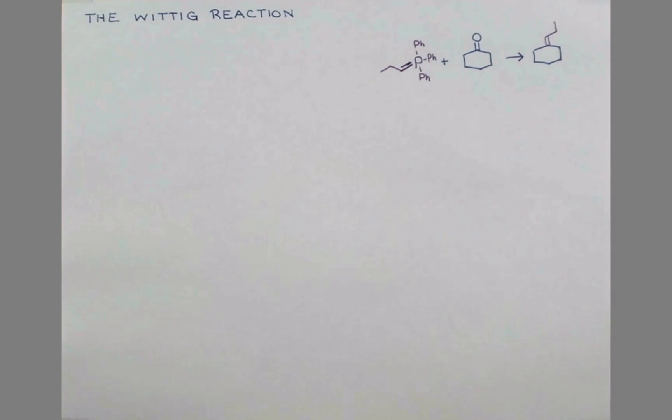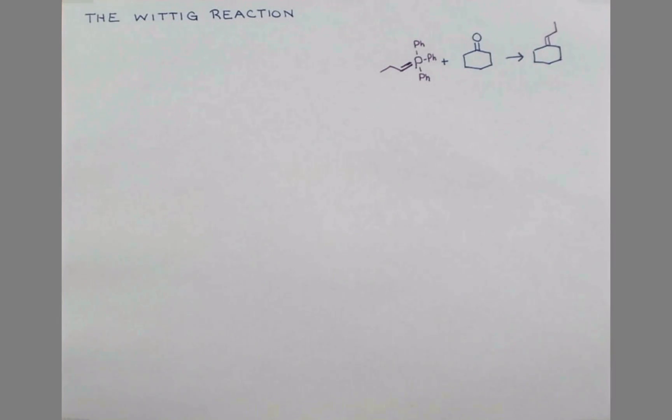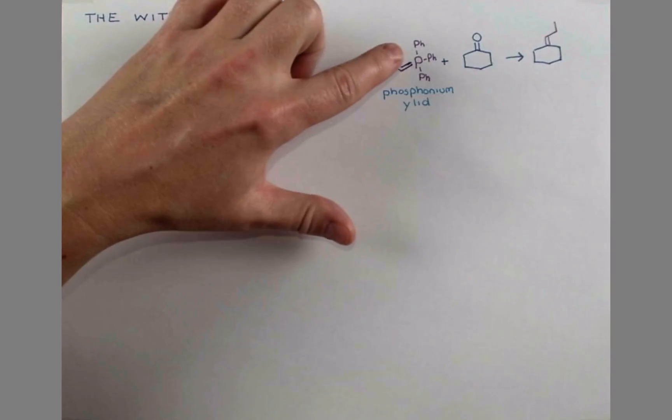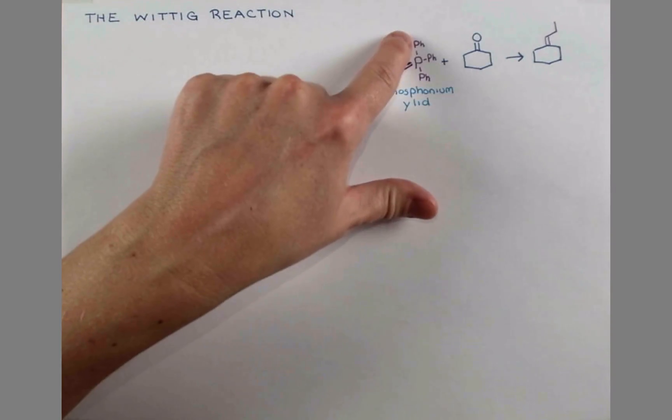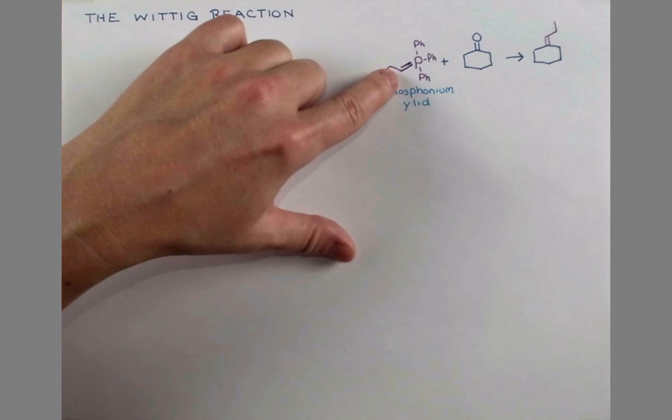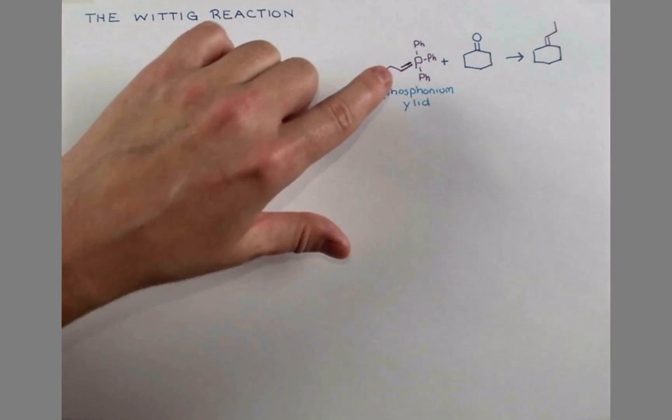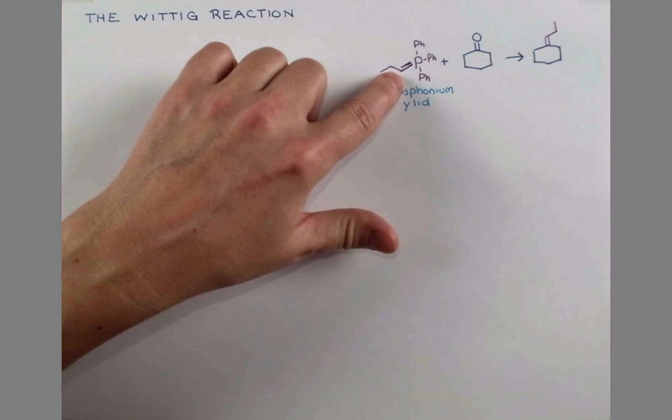Before we go any further, we need to talk a little bit more about the nature of this compound. Phosphorus is neutral when it has three or five bonds, and here we have a bond to three phenyl rings, so these are just benzene rings hanging off of this, and then we have two bonds to a carbon, so we're at five bonds, and phosphorus is neutral in this resonance form.